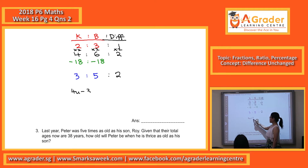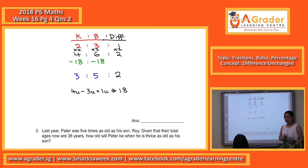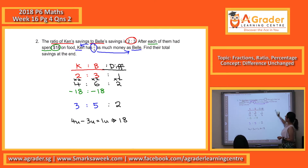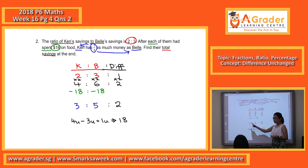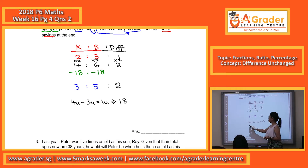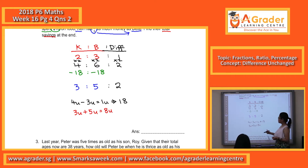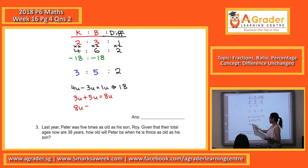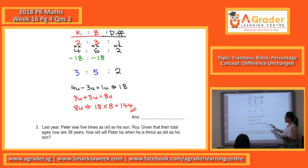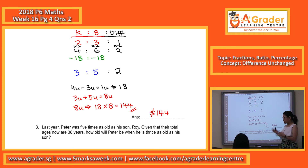So 1 unit equals $18. Now we look at what the question asks for — the total savings at the end. The total savings at the end will be the 3 units and the 5 units combined, which is 8 units total. Using 1 unit = $18, we calculate 8 units = $144. Remember to include the dollar sign, since this question is about money.